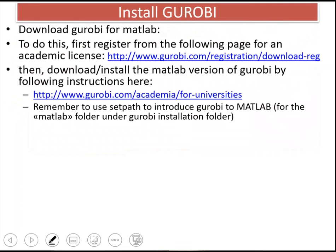If you go to the Gurobi website, you will see that there is a MATLAB version. There are other versions for Gurobi — for example, there is a Python version and an R version. First you need to register for an academic license, then you can download and install the MATLAB version of Gurobi using the given instructions. Then again by using set path in MATLAB, you can introduce Gurobi to MATLAB.